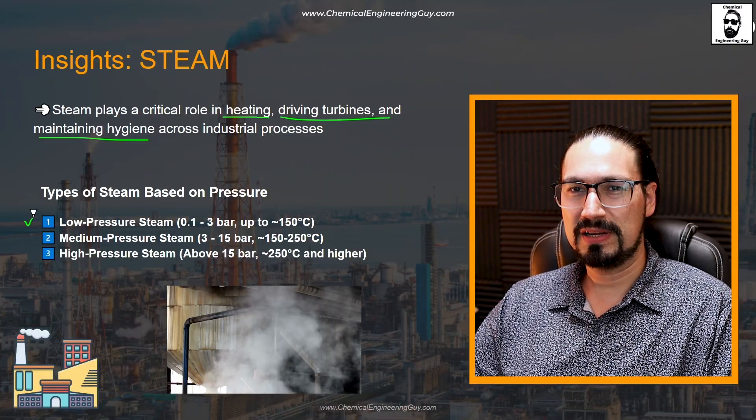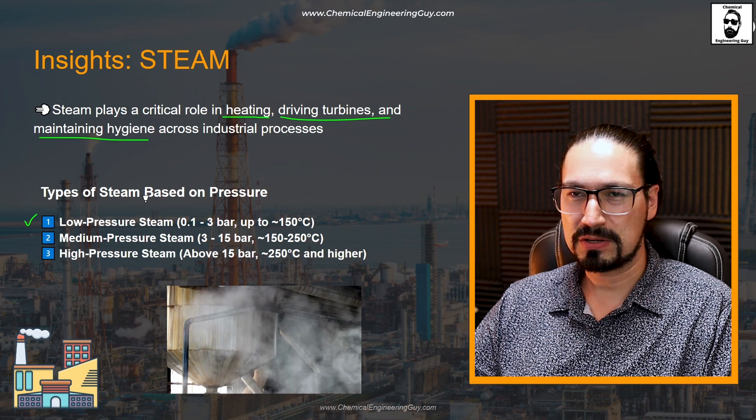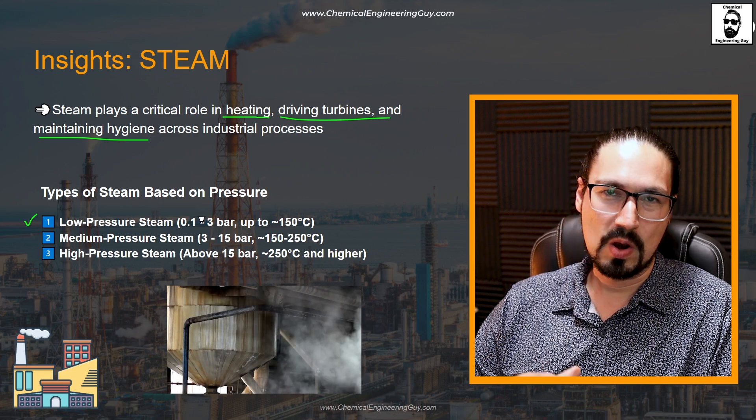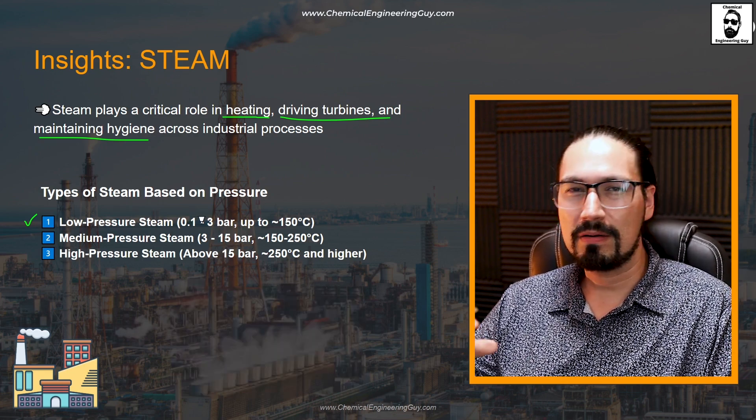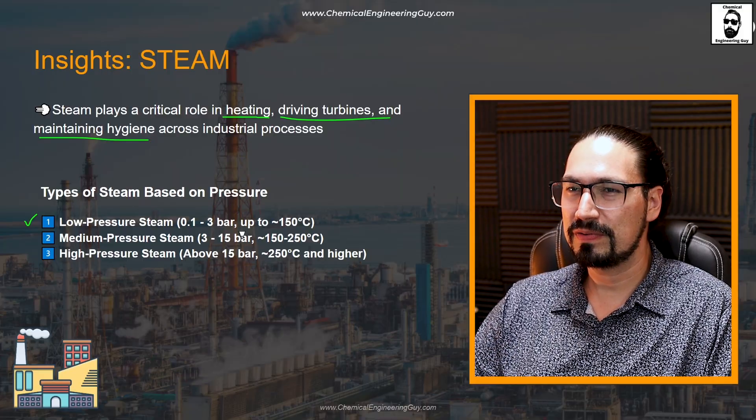Typically, we have low pressure or normal pressure steam. It can be below atmospheric or vacuum steam, but typically above one to two bar. High pressure steam is much more efficient — higher temperatures will last longer before condensing. But this really depends on the type of industry you're working in, so ensure to check the specific steam lines in your chemical plant.